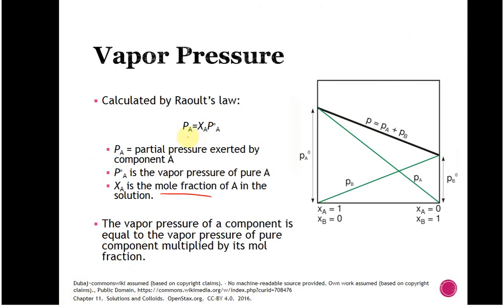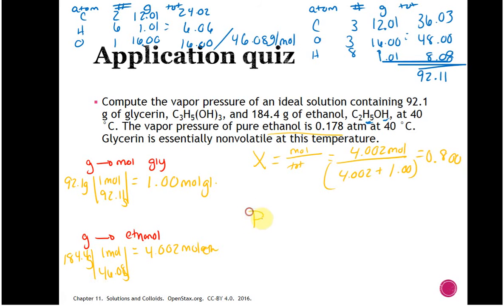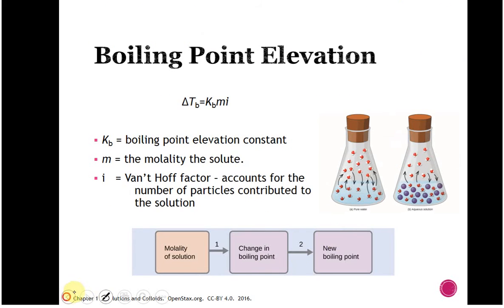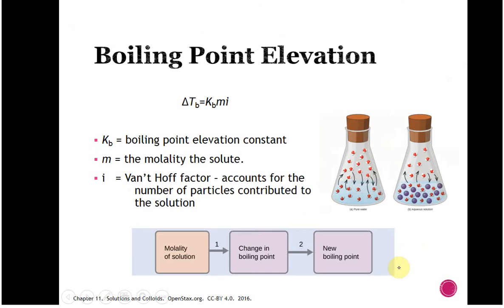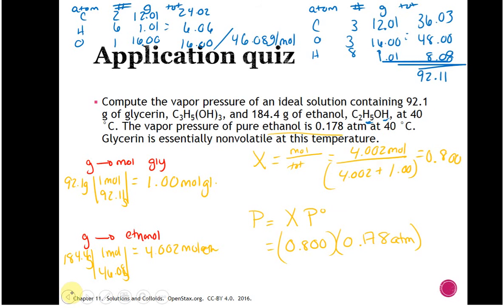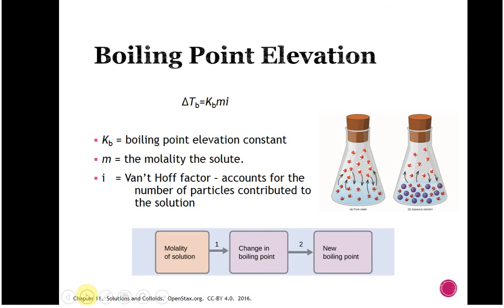Raoult's Law says: partial pressure = mole fraction × pure vapor pressure. So the partial pressure of ethanol equals 0.800 × 0.178 atm = 0.142 atm. That's how vapor pressure works in a solution.